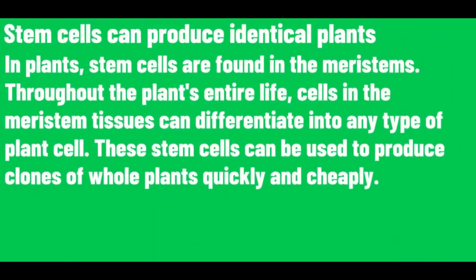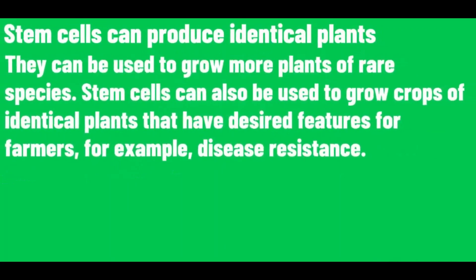In plants, stem cells are found in the meristem throughout the plant's entire life. Cells in the meristem tissues can differentiate into any type of plant cell. These stem cells can be used to produce clones of whole plants quickly and cheaply, to grow more plants of rare species, or to grow crops of identical plants with desired features for farmers, for example disease resistance.